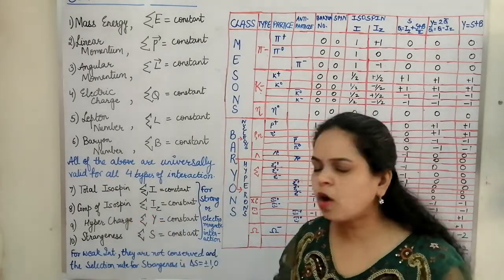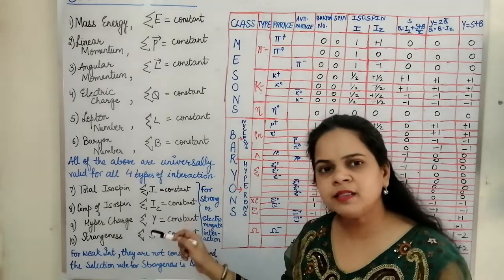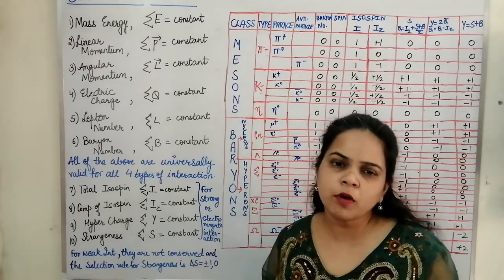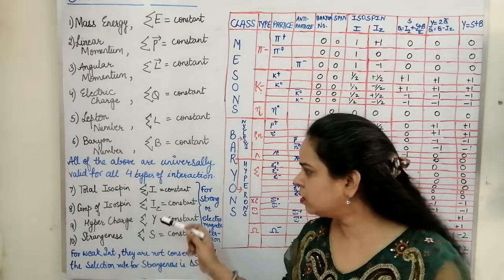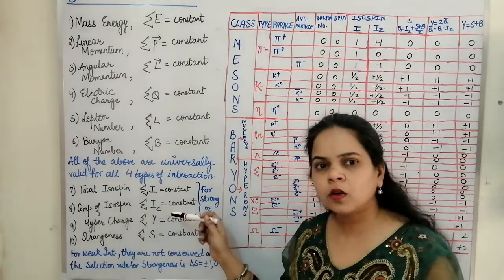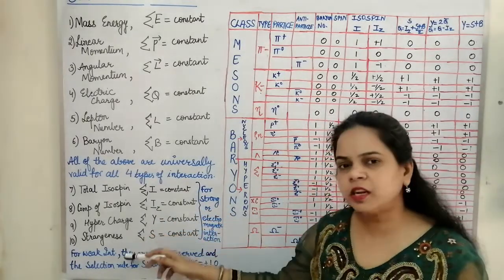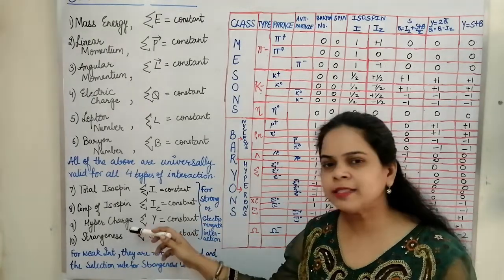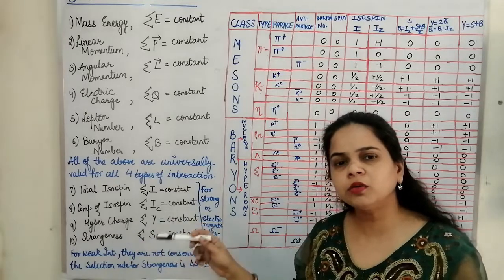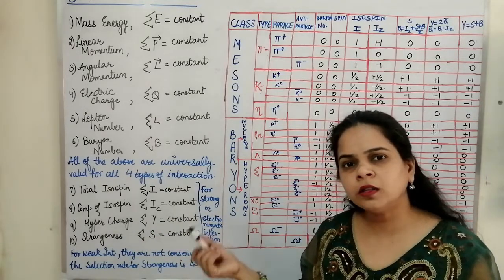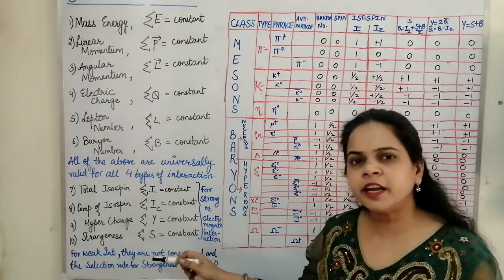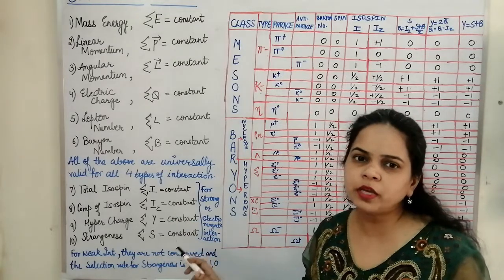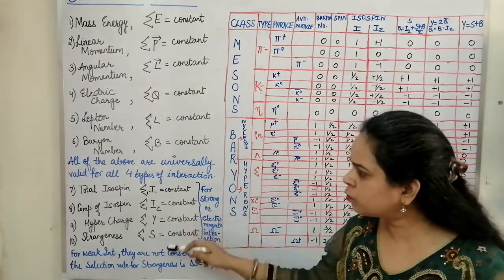For the z-component of isospin, the sum of Iz values on the reactant side must equal the sum on the product side — the summation of Iz is constant. For hypercharge and strangeness, similarly the sum of hypercharge values on the reactant side must equal those on the product side, and the summation of Y and the summation of S must be constant.